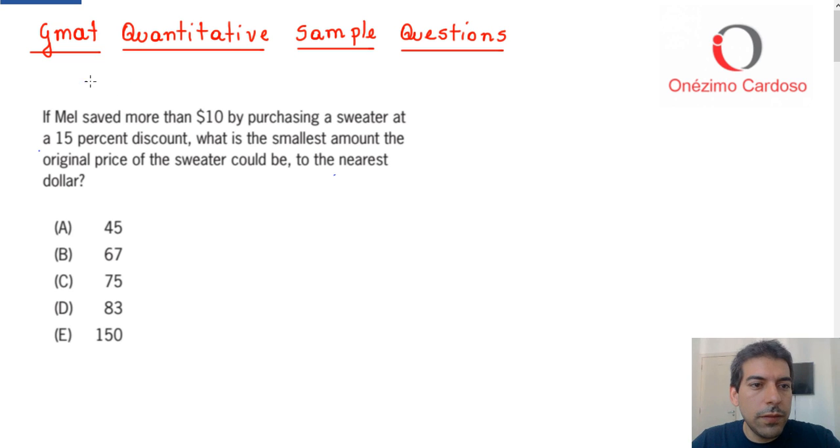Hello guys, in this video I will solve three sample questions from the quantitative part of the GMAT exam. Let's go to the first one. It says that if Mel saved more than $10 by purchasing a sweater at a 15% discount, what's the smallest amount the original price of the sweater could be to the nearest dollar?